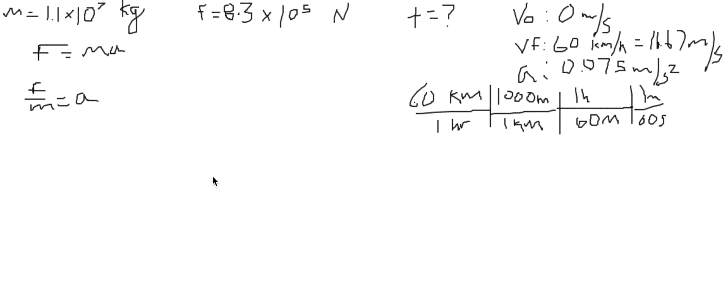And we're trying to find time, so we can use the equation VF minus V0 divided by acceleration. That's just time. Plugging in our values, we have 16.67 meters per second minus 0 meters per second divided by 0.075 meters per second squared. We get a value of 222.27 seconds.